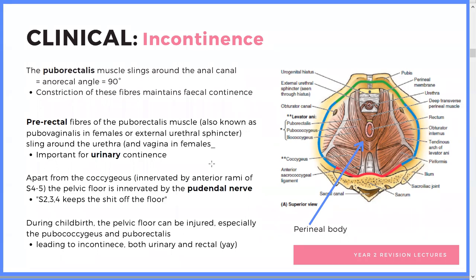Patients — usually because of childbirth — may have injuries to either those muscles or the nerves supplying them, and may have fecal incontinence, urinary incontinence, or both. The pre-rectal fibers of the puborectalis muscle also go around the external urethral sphincter, contributing to urinary continence. A good way to remember the innervation of that area is the pudendal nerve: S2, S3, S4 keeps the floor.